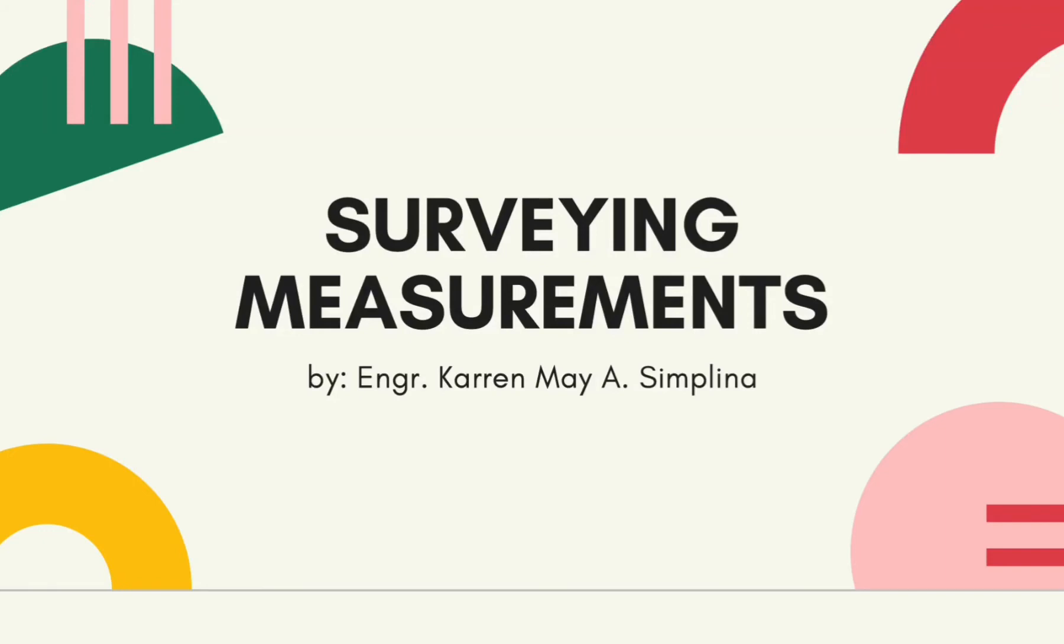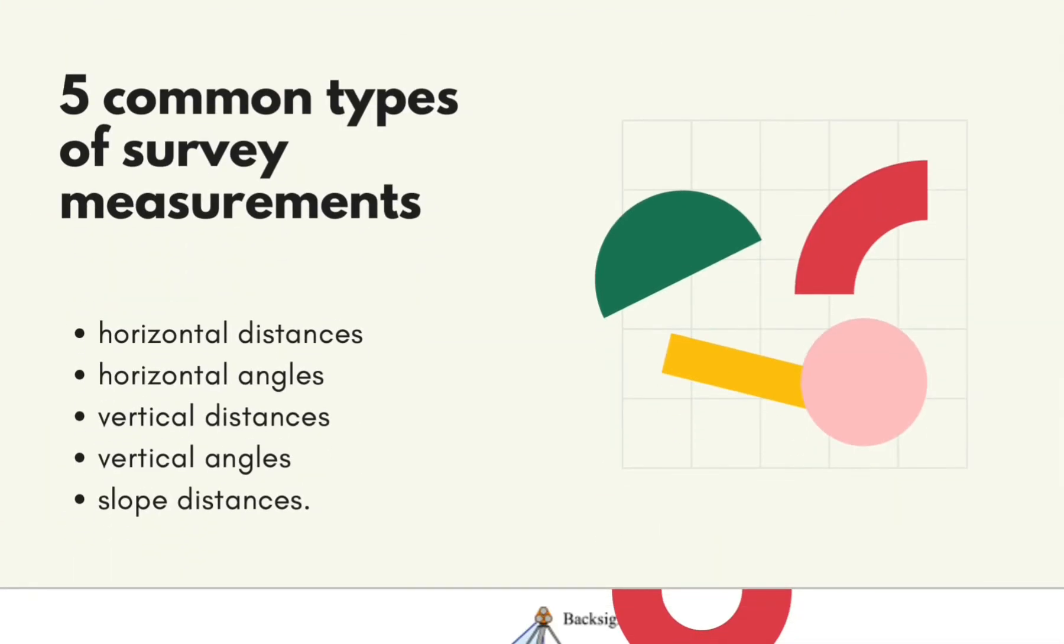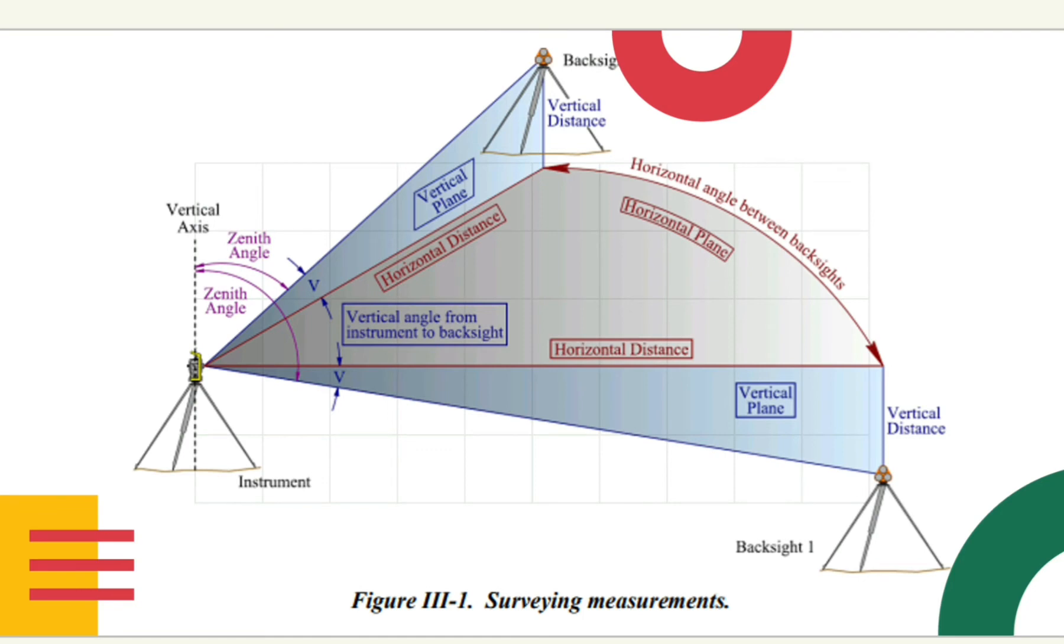The purpose of this section is to discuss the different types of surveying measurements, identify error sources, and describe procedures to minimize errors. The five common types of survey measurements are horizontal distances, horizontal angles, vertical distances, vertical angles, and slope distances.